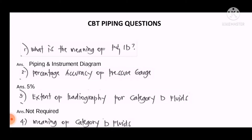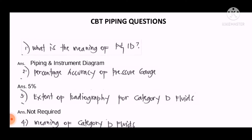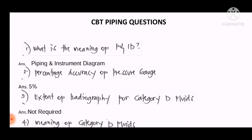Question number one: What is the meaning of P&ID? The answer is piping and instrument diagram.